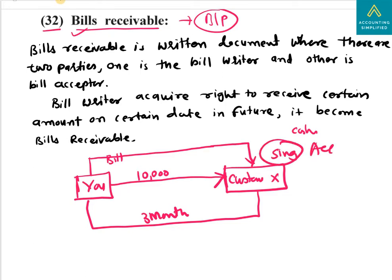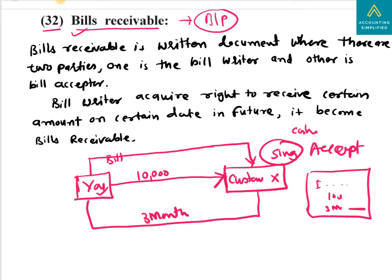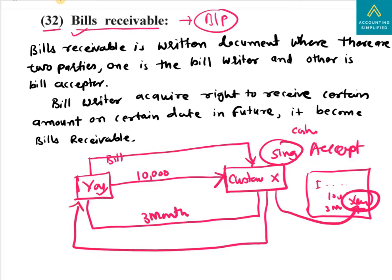This written document is made by you. You give it to customer X, and he signs and accepts the bill. By accepting the bill, he is saying: I hereby accept that I will give Mr. U Rs. 10,000 after 3 months. This signed document by Mr. X is a guarantee that he will pay. If he doesn't pay, you have legal recourse.